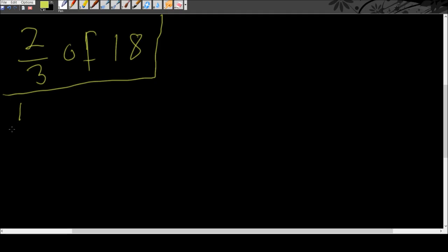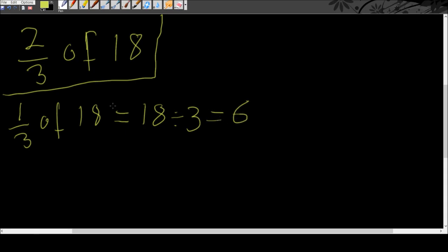So let's write it down. One-third of 18 is equal to 18 divided by 3, and this gives us 6. What we've done is taken our 18 and divided it by 3, since we're only looking for one-third of it.